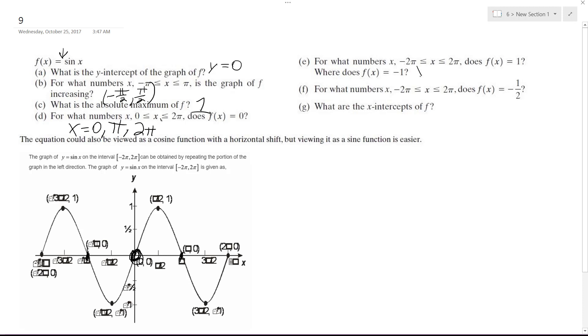So f of x equals one at x equals negative three pi over two and pi over two. That's it. And then it equals negative one at negative pi over two and three pi over two.